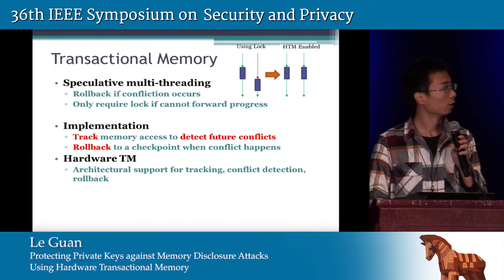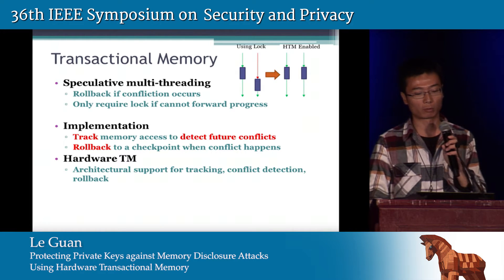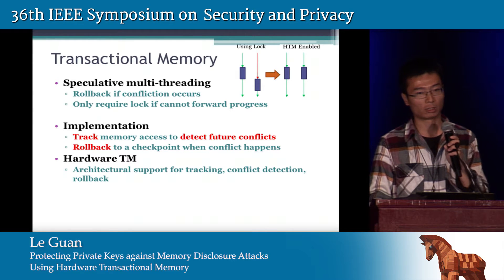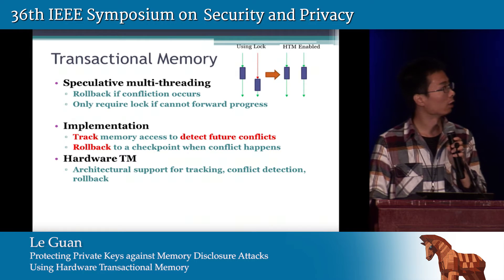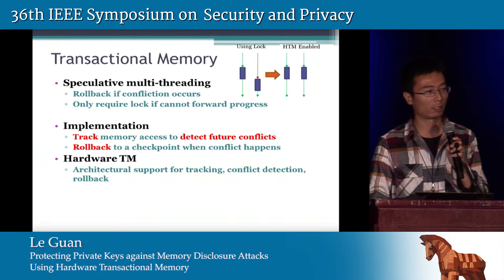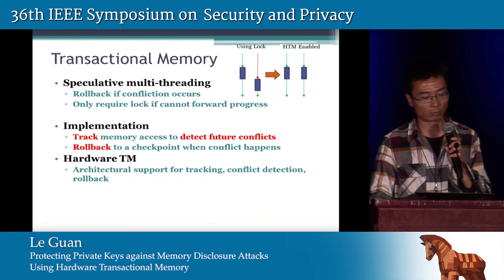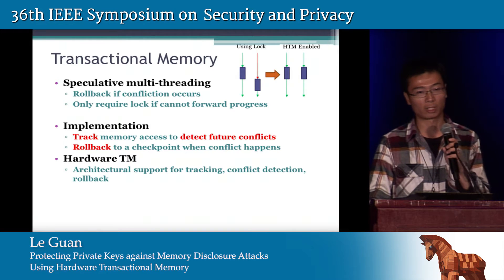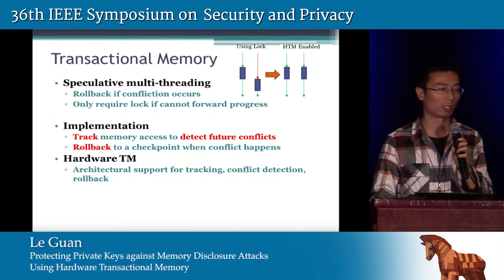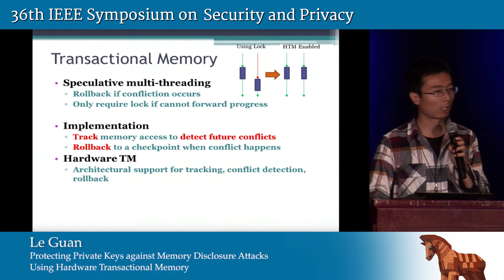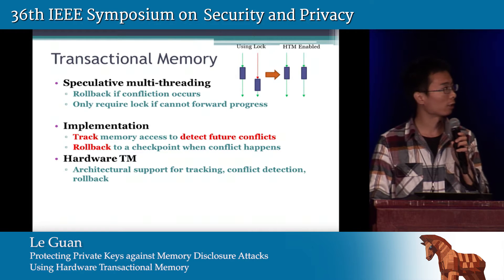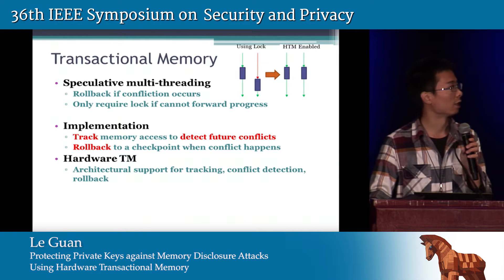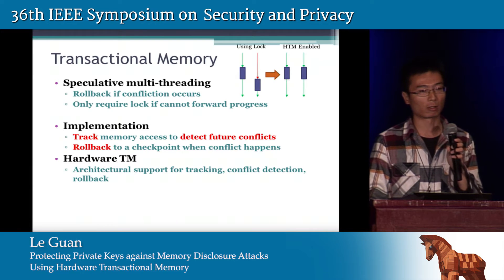To speed up multi-threaded programs, transactional memory was introduced. Transactional memory allows for speculative multi-threading — that is, all threads execute in their own path simultaneously, and only if a real data conflict is detected do they roll back to a checkpoint. To implement transactional memory, there must be mechanisms to track data accesses to detect future conflicts, and when a real conflict happens, there must be mechanisms to roll back. Transactional memory can be implemented in software or hardware. In hardware transactional memory, the processor has architectural support for tracking, conflict detection, and rollback.